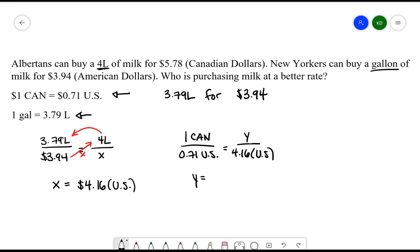All right. Let's plug it in. What we're going to get here, and of course, the cross multiplying on this one, we're going to go 4.16 multiplied by 1 and then divide by 0.71. What I'm getting is $5.86.